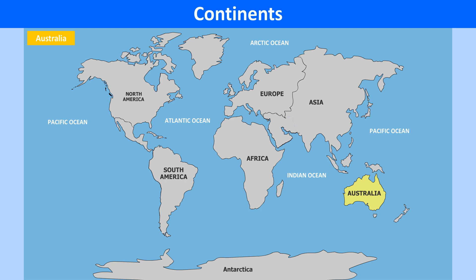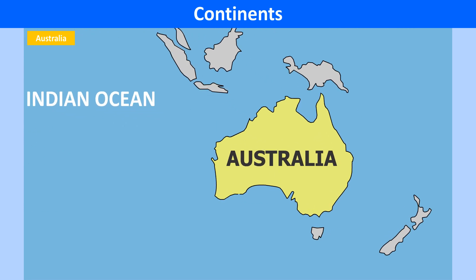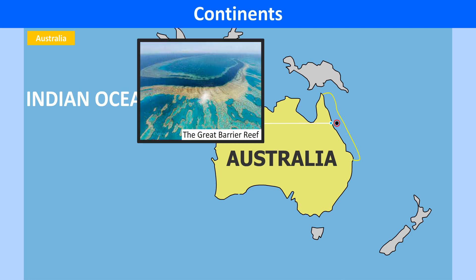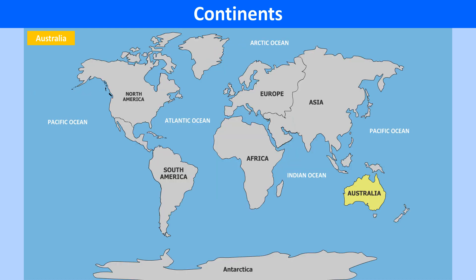Australia is marked by low relief and aridity. The major rivers of the continent are Murray, Darling, Flinders and Swan. The Great Barrier Reef is one of the most remarkable relief features of Australia. It is composed of corals. It lies entirely in the southern hemisphere.